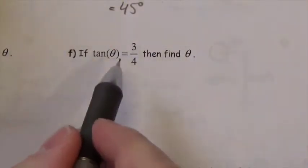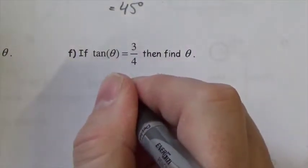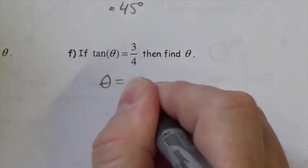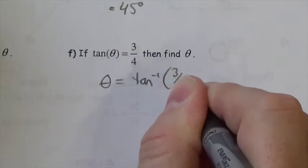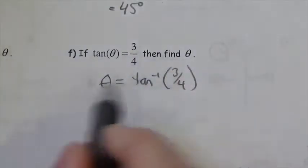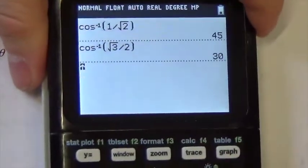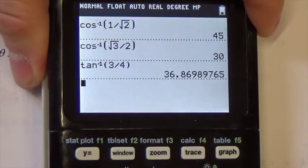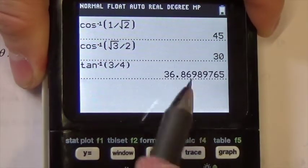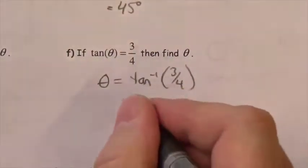Finally, if the tangent of theta is equal to 3 quarters, then what's theta? Theta is going to be the inverse tangent of 3 quarters to go back to the angle. So second tangent of 3 quarters, and we're going to round that to 37 degrees.